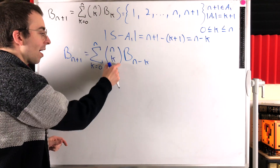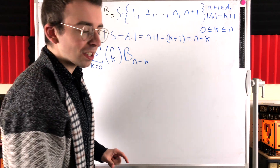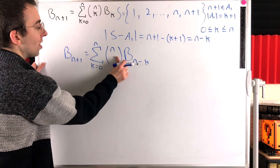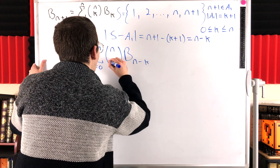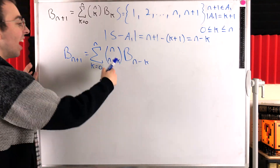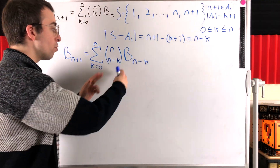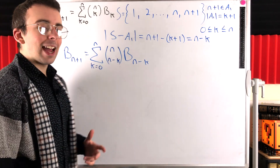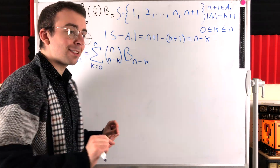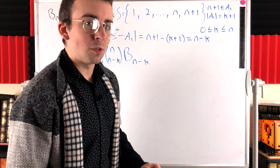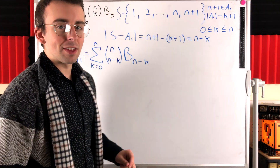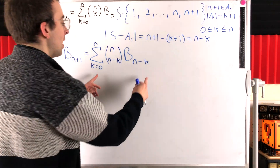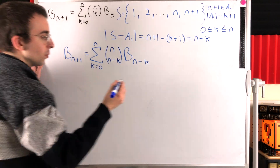We've got a binomial coefficient N choose K. By the symmetric property of binomial coefficients, N choose K is the same as N choose N minus K. I'll leave a link in the description to a proof of that fact. The basic idea is that N choose N minus K is the same as picking K elements to not choose, which is of course N choose K. So we can rewrite our expression using N choose N minus K.